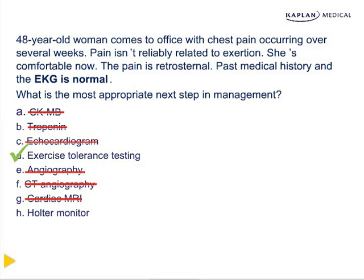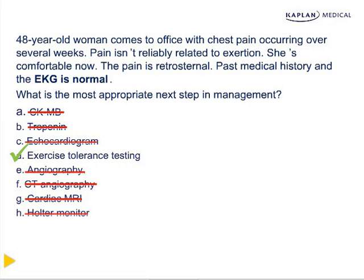CT angiography is not yet ready for routine use; high calcium scores are associated with worse disease, but precise indications remain unclear. Cardiac MRI also lacks clear established indications. The Holter monitor is exclusively for rhythm evaluation — it's the answer when a patient has palpitations or syncope and you suspect an occult arrhythmia not detected on a standard EKG. For this patient, the most important thing is to determine whether she is having ischemic pain. When the story is not clear, get a stress test.